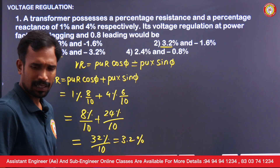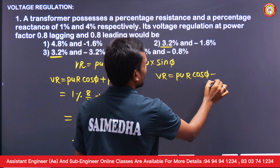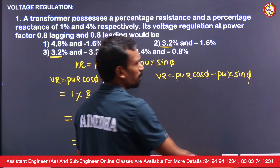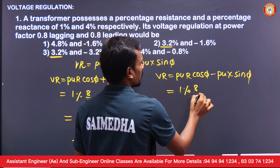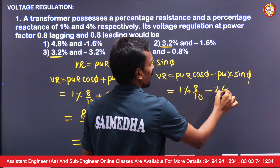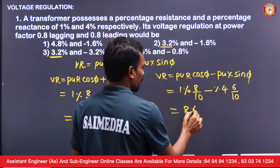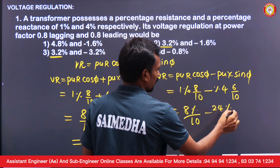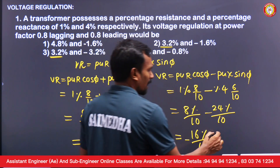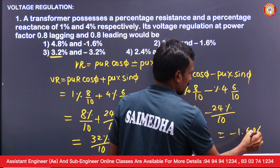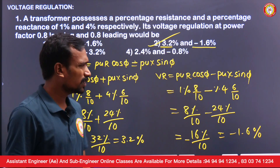For leading load, voltage regulation = per unit R × cos φ − per unit X × sin φ. Per unit R is 1%, cos φ is 0.8, per unit X is 4%, sin φ is 0.6. So: 8%/10 − 24%/10 = −16%/10 = −1.6%. The answer is −1.6%. This is a repeated exam-level question expected for diploma level.